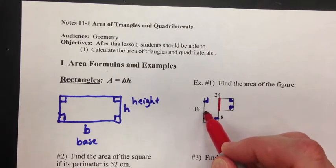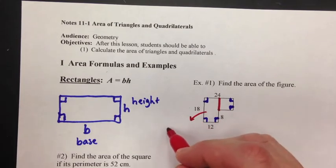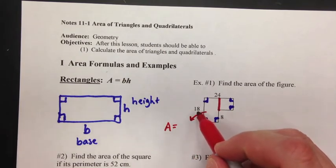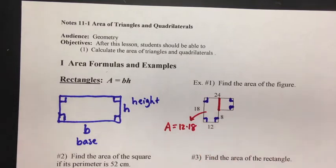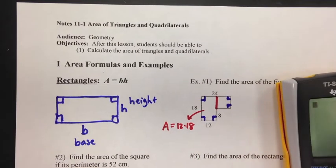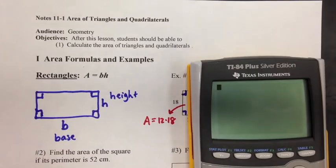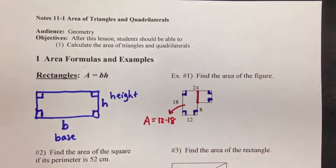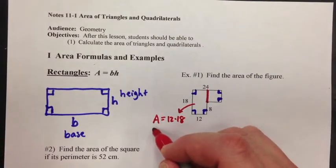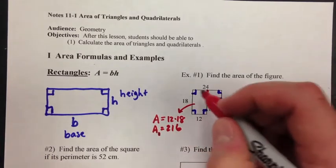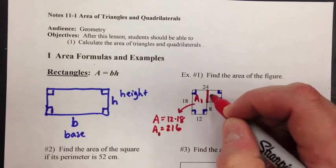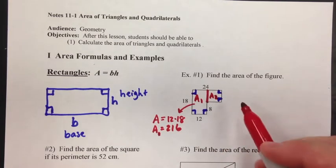Area is base times height. So the area of this one, the base and the height would be 12 and 18. So 12 times 18 equals 216. That area is 216. I'm going to call that area 1.